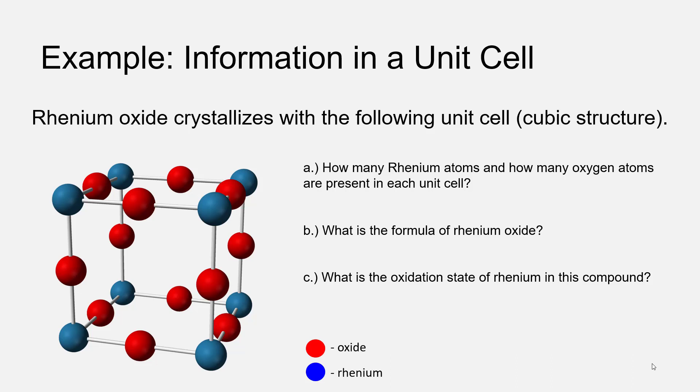In this example, which comes from outside your OpenStax textbook, we're asked to determine the formula of an ionic compound by looking at the unit cell of the crystal of the ionic compound, Rhenium oxide.